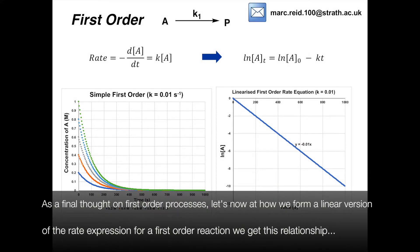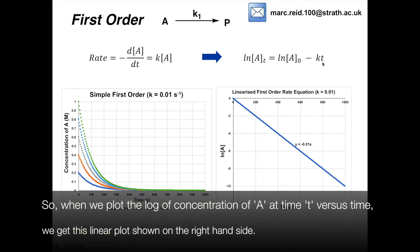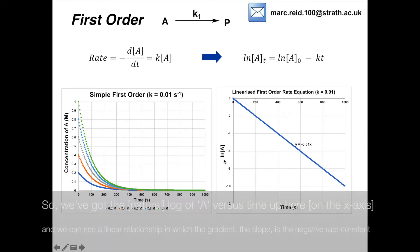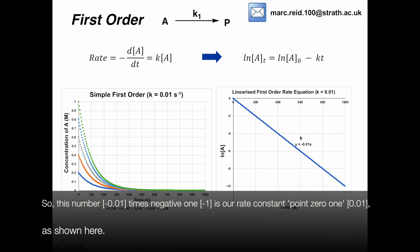As a final thought on first order processes, let's look at how we form a linear version of the rate expression. If we integrate the rate expression for a first order reaction, we get the natural log of A at time T equals the natural log of A at time zero minus kT. So when we plot the log of concentration at time T versus time, we get a linear plot where the gradient — the slope — is the negative rate constant, giving k equal to 0.01 per second as shown.